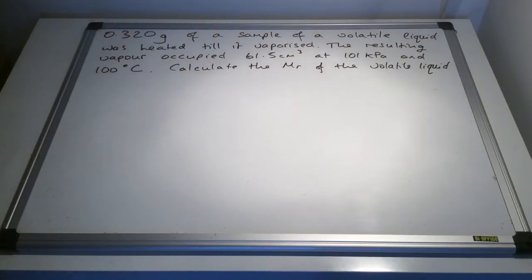So if we look at a slightly different style of ideal gas question now, we're given a mass of a sample of a volatile liquid, we're told it's heated till it vaporizes, so obviously it's turned into a gas. The resulting vapor occupies a specific volume, 61.5 cubic centimeters, at the pressure of 101 kilopascals and temperature of 100 degrees C. And we have to calculate the MR of the volatile liquid.